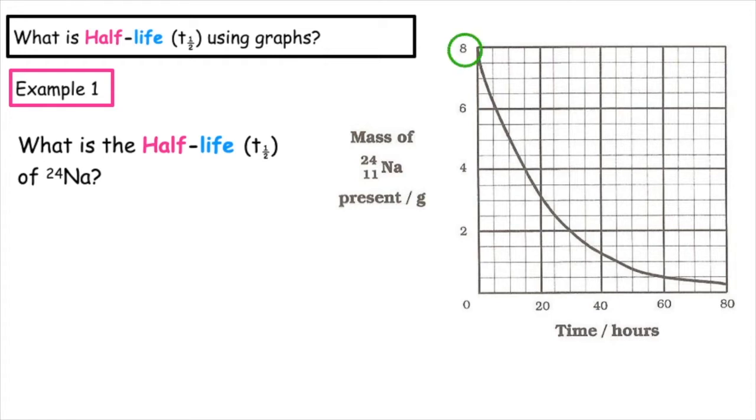We know that the half-life is the time taken for the mass to half. So if we take eight and it undergoes one half-life, that would give us four grams. So on the graph, on the y-axis, we'll circle four. From here, we want to draw a line from four until we meet the curve. And then we want to extrapolate that down to the x-axis to identify the time.